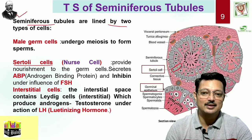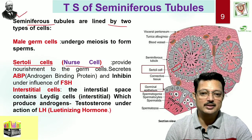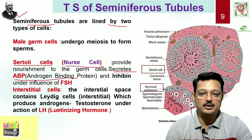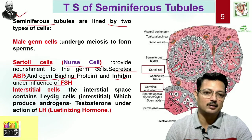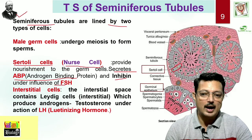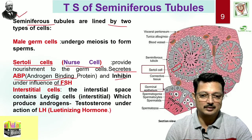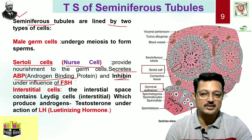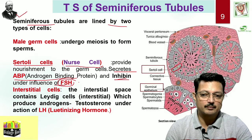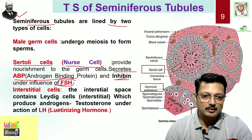Sertoli cells are very special because they produce two important things: androgen binding protein (ABP) and inhibin. The Sertoli cells are also the site of spermatogenesis. Androgen, which happens to be testosterone, has to be concentrated, and this concentration work is done by androgen binding protein. Sertoli cells also secrete inhibin, which regulates the secretion of FSH — follicle stimulating hormone — released from the pituitary gland. The germinal epithelium cells are the actual source for production of sperm.